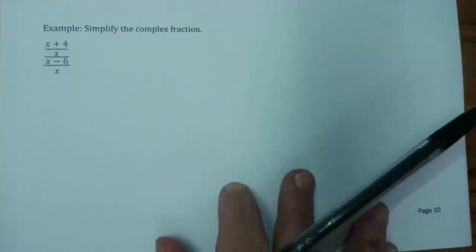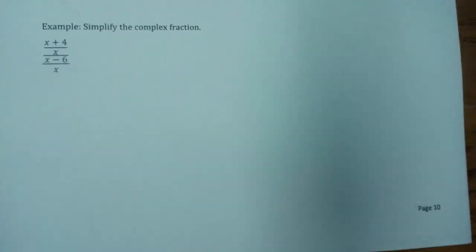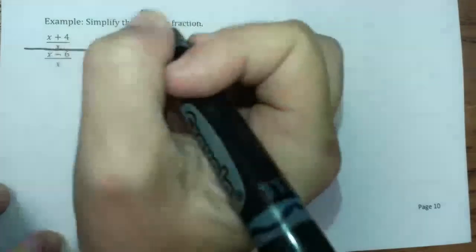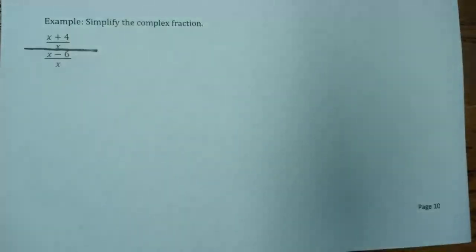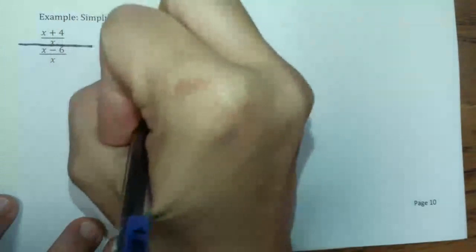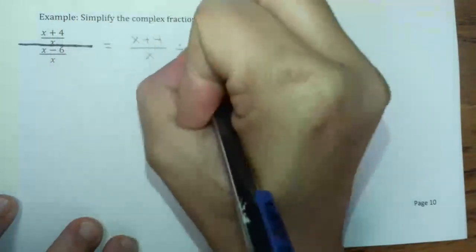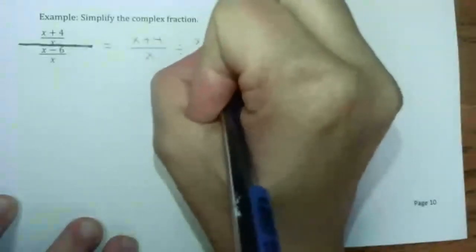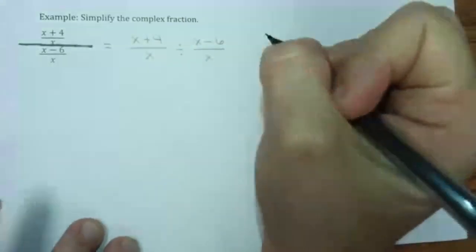Now let's do something a little more our speed. Simplify the complex fraction: x plus 4 all over x, over x minus 6 over x. I can highlight this middle fraction bar — fractions mean divide. So I can rewrite it as x plus 4 over x, divided by x minus 6 over x.